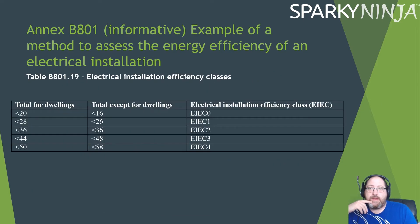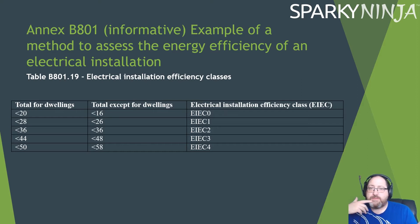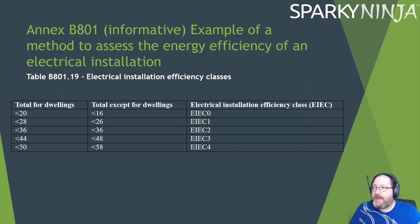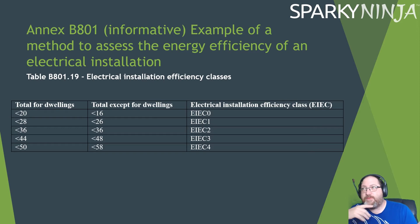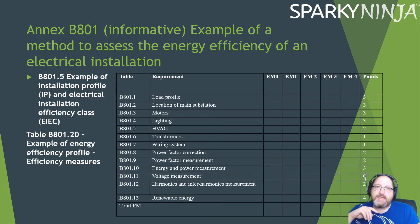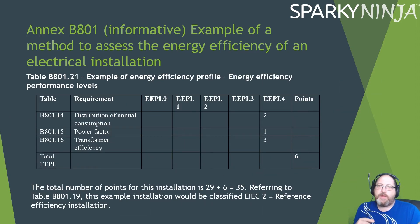35 points, referring back to the scoring table, falls below 36 — giving an EIEC of two. That's not bad, but it suggests there is room for improvement since you could reach a three or four with more effort. That's how the scoring system works.